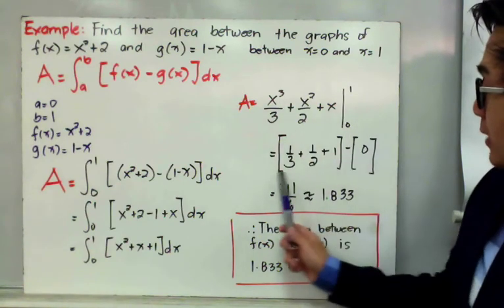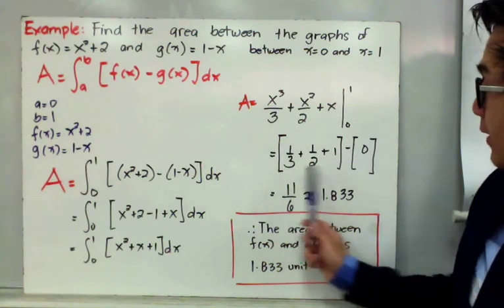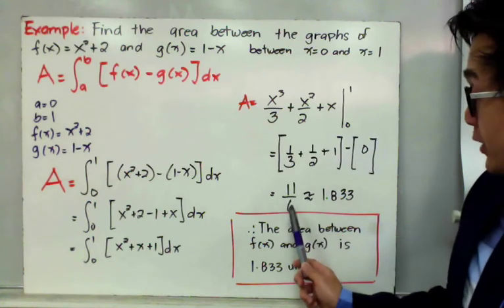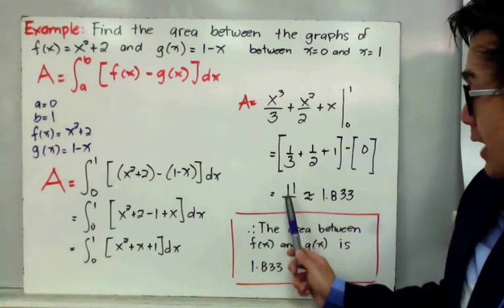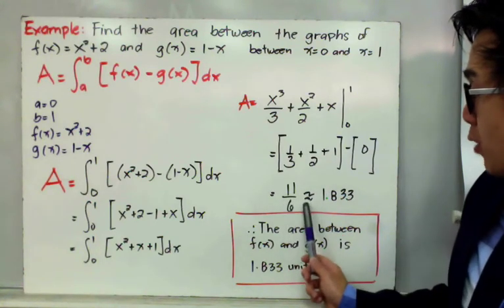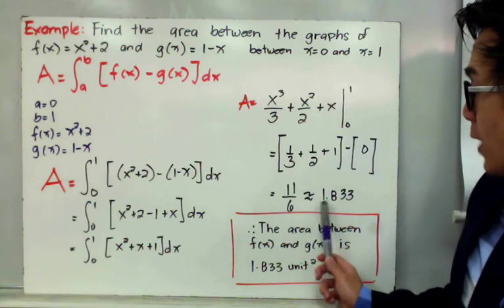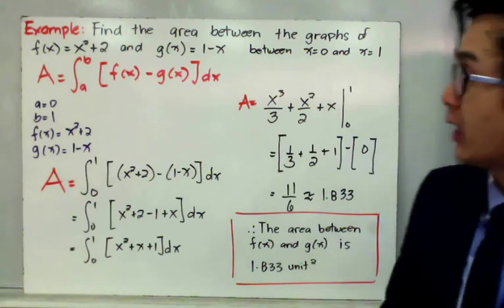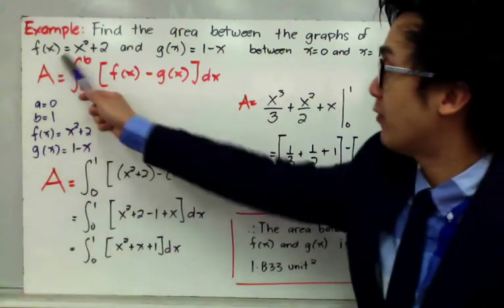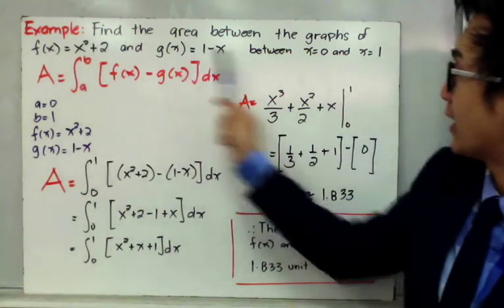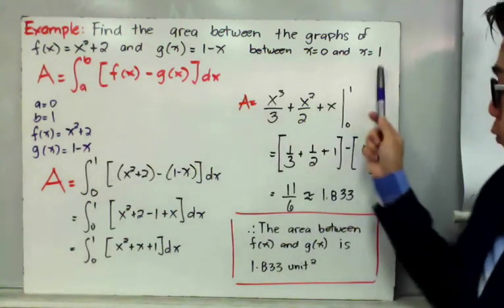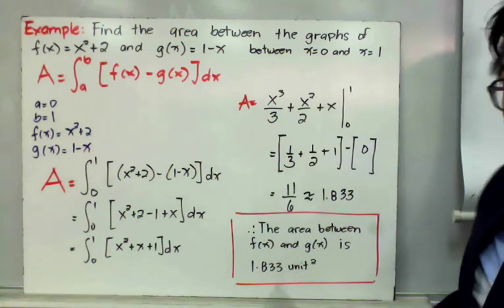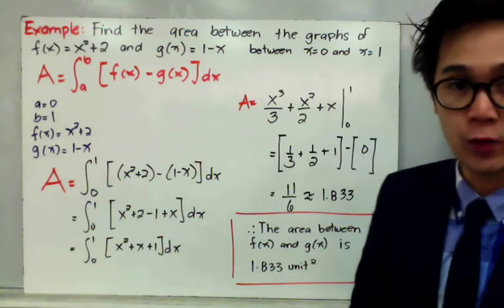Simplifying that expression gives us 11/6, and 11/6 is approximately equal to 1.833. Therefore, the area between f(x) and g(x) from 0 to 1 is 1.833 square units.